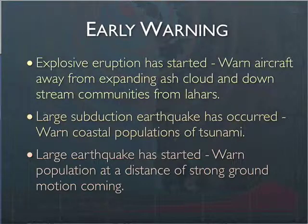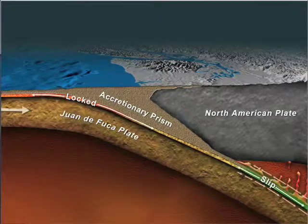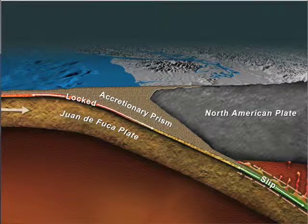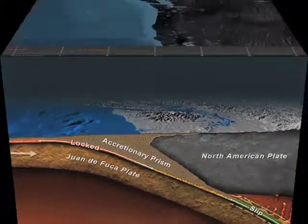What about large earthquakes themselves? Once an earthquake starts, seismic waves radiate and travel at a fast but finite velocity. So if we had a big earthquake someplace, can we warn cities at some distance that shaking is coming? The best case where this might work is right here in the Pacific Northwest — if the locked zone goes in a big earthquake and rips the whole distance from Northern California to Southern British Columbia.